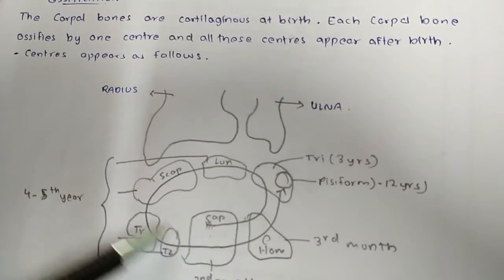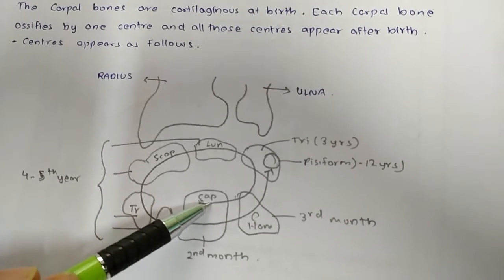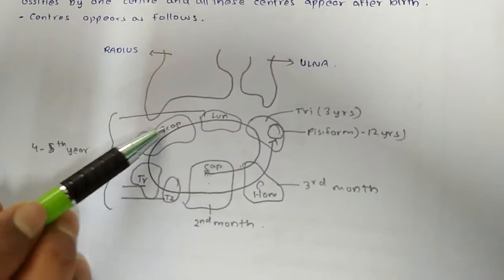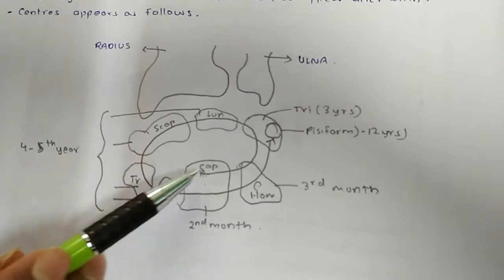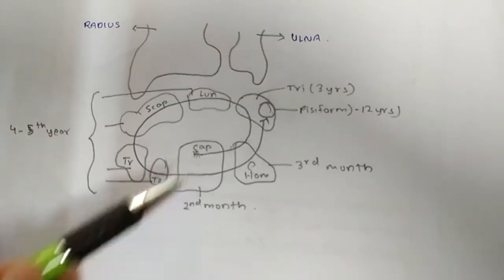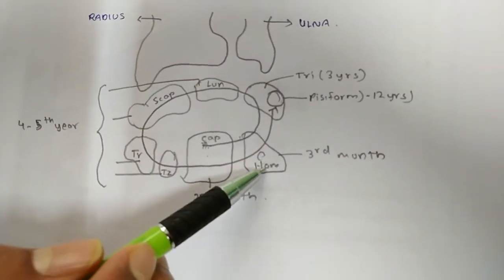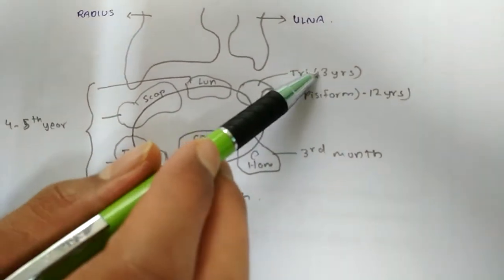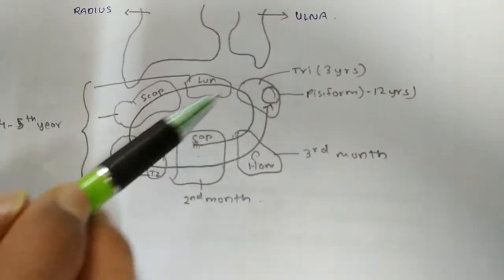Now first to learn this, just look at this arrow that starts from capitate, then hamate, then triquetral, lunate, scaphoid, trapezium, trapezoid and last pisiform. So first one is capitate, which center appears at second month after birth. Then hamate where the center appears at third month. And the third is triquetral. These two are the only bones which appear at months. Then all other bones are years.